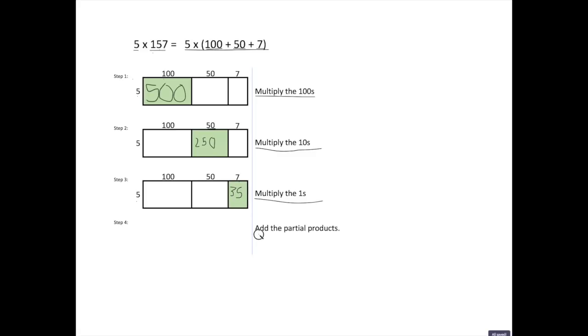Now our final step is to add the partial products. So it's called a partial product because our answer to multiplication problems are called our products. But we don't have our final product yet, we just have part of our answers. So that's where the term partial product comes from. So we have 500, our first green box, plus our second green box, which is 250, and our final green box, which is 35.